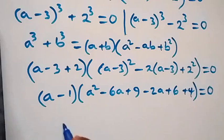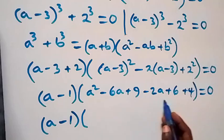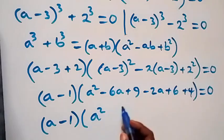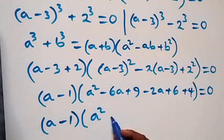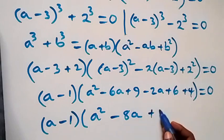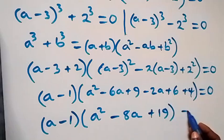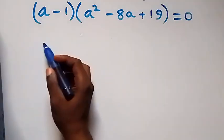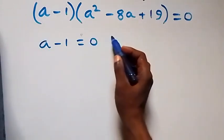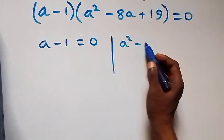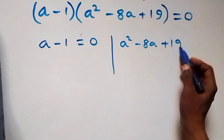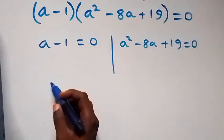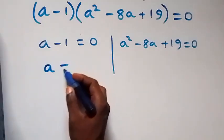This can be written as (a minus 1) times [a squared minus 6a minus 2a, giving minus 8a, then 9 plus 4 minus 6 giving 7... that is a squared minus 8a plus 19] equals to 0. From here we have two cases: the first one, a minus 1 equals to 0, giving a equals to 1, or we have the quadratic a squared minus 8a plus 19 equals to 0.